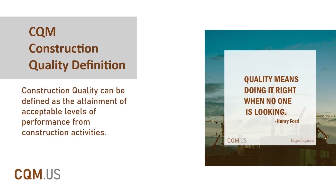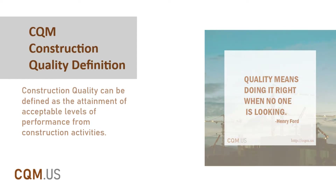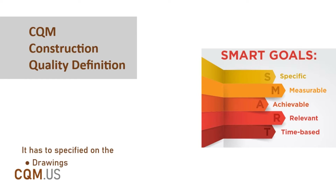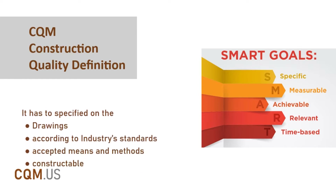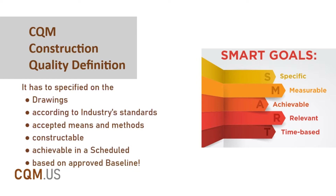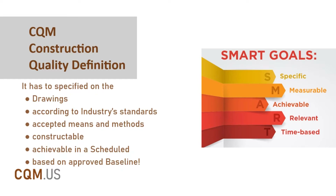However, to manage anything it must be measurable — it must be SMART. SMART goals are specific, measurable, achievable, realistic, and time-bound. Therefore, construction quality cannot be defined only in specifications of contract documents. It has to be specified on the drawings according to industry standards and accepted means and methods, constructible and achievable in a schedule based on an approved baseline.